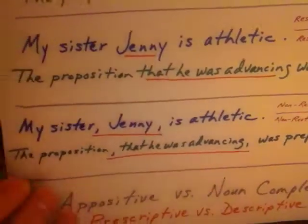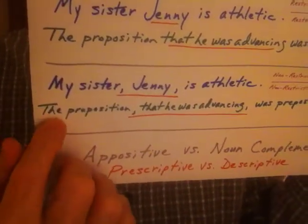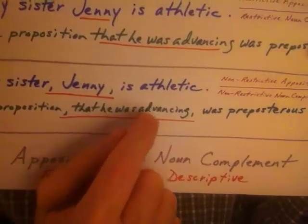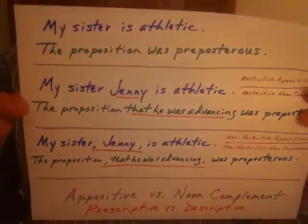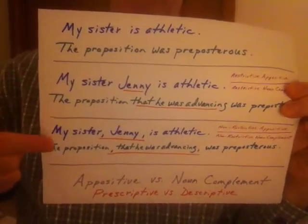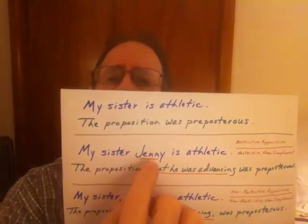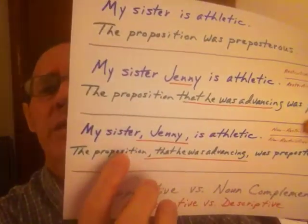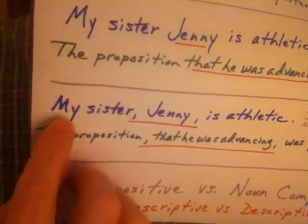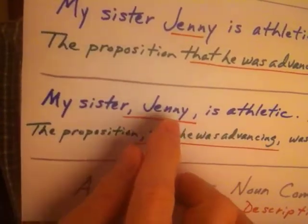Hold that thought and go back to our other sample sentence: "The proposition, comma, that he was advancing, comma, was preposterous." So now you see between these two sentences we have two different things going on in the mind. Here we know I have a sister named Jenny, but we don't know — do I have other sisters? But right here, when you use these commas, what you're saying is: my sister — and here's a comma — Jenny. That is my sister exclusively. I have only one sister.